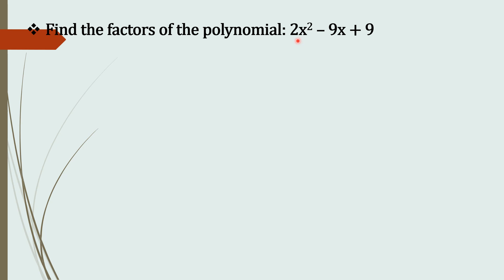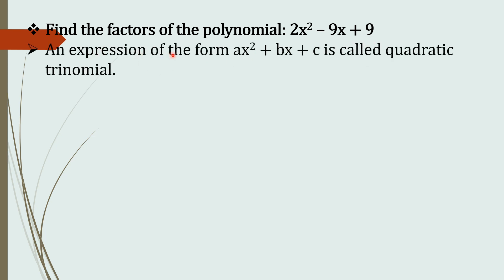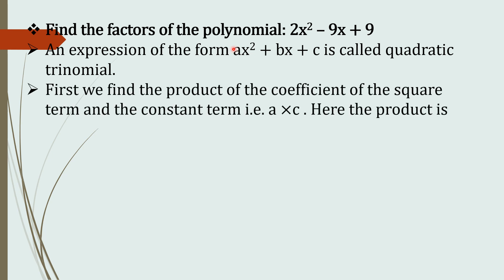Similarly, students, we will be studying factors of polynomials. I have taken one example of a polynomial: 2x² minus 9x plus 9. Now, an expression of the form ax² plus bx plus c is called a quadratic trinomial. Here a is your coefficient 2, b is your middle term coefficient minus 9, and c is your constant term 9. Such an expression is called a quadratic trinomial.